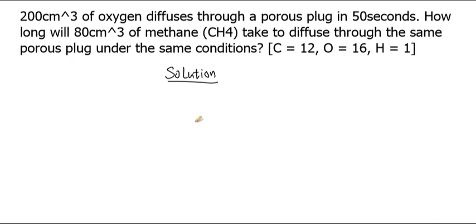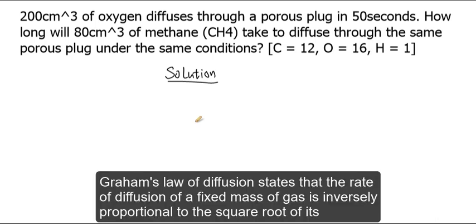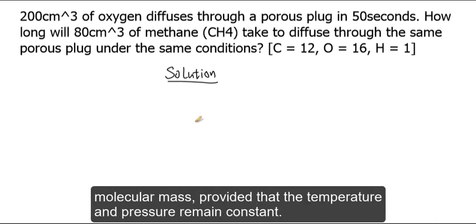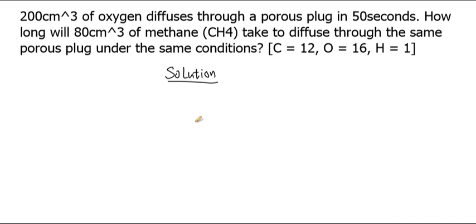We'll be applying Graham's Law of Diffusion, which states that the rate of diffusion of a fixed mass of gas is inversely proportional to the square root of its molecular mass, provided that the temperature and pressure remain constant. It implies that at constant temperature and pressure, the rate of diffusion is inversely proportional to the square root of its molecular mass — or it can also be the square root of its density — but here we'll be working with the molecular mass of each of the gases.